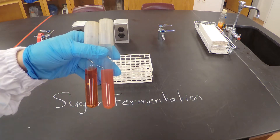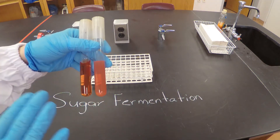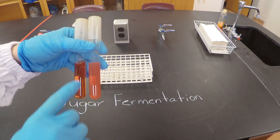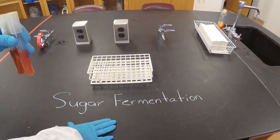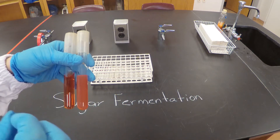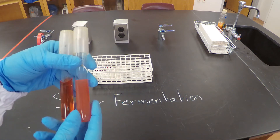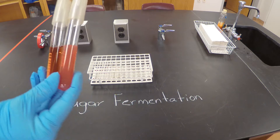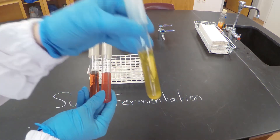If the bacteria were able to use the sugar that is inside both tubes, there will be sugar fermentation. The environment will turn acidic and methyl red will turn yellow — like here.